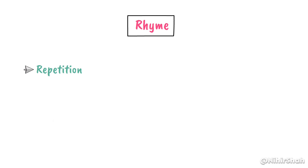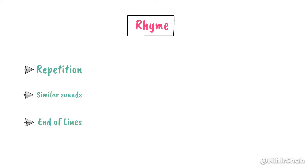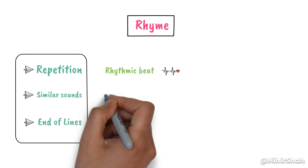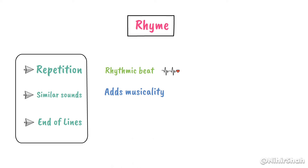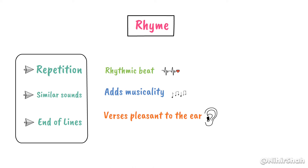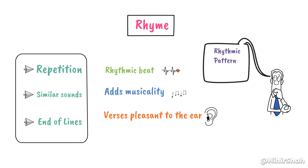What is a rhyme? Rhyme is the repetition of similar sounds, usually at the end of lines in poetry. It's like the rhythmic beat of a poem that adds musicality and makes the verses pleasant to the ear. Think of rhyme as a playful dance of words that creates a pattern, making the poem more engaging and memorable.